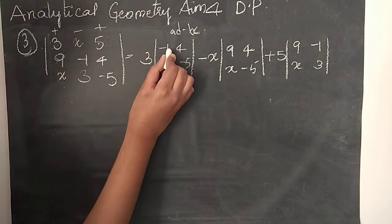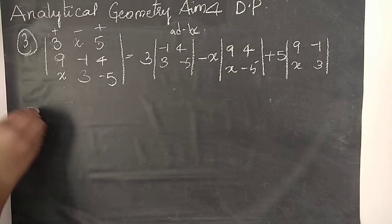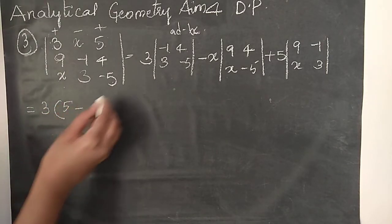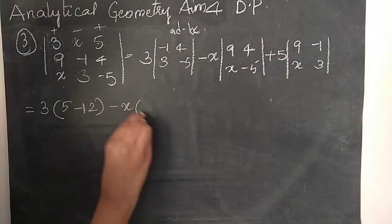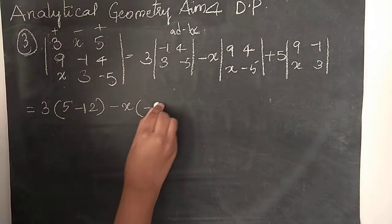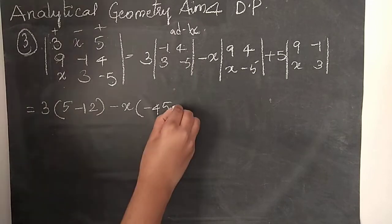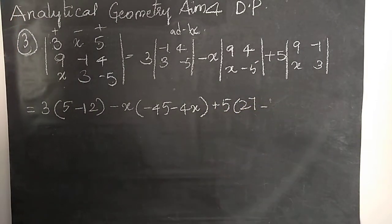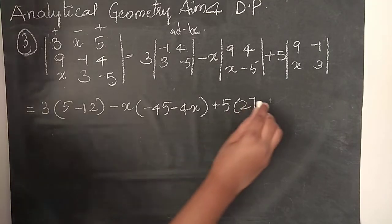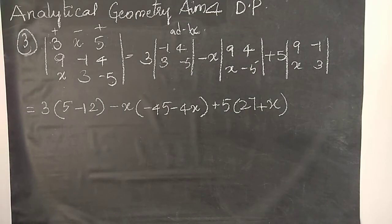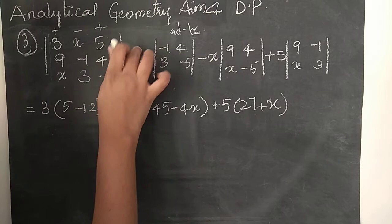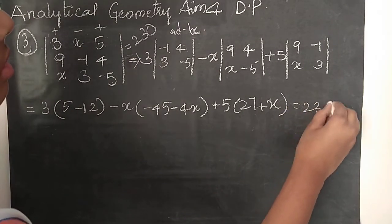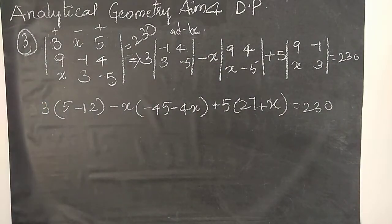So: 3 into minus 1 times minus 5 is plus 5, minus 4 times 3 is 12. Minus x into 9 times minus 5 is minus 45, minus 4 times x is 4x. Plus 5 into 9 times 3 is 27, minus minus 1 times x is plus x. This value equals 230.